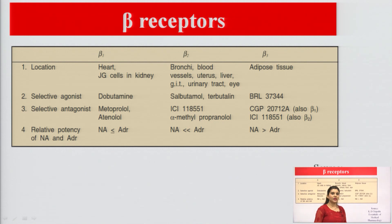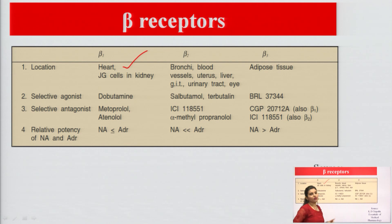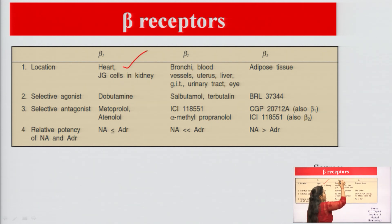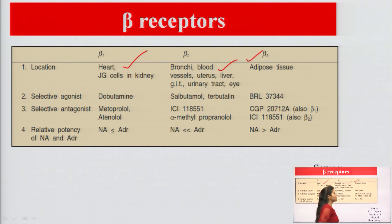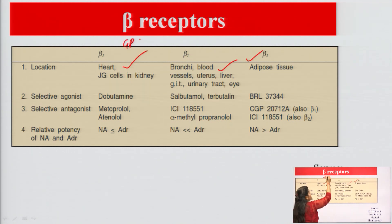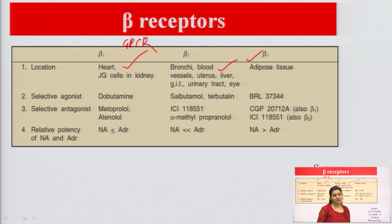The primary location of beta-1 receptor is the heart. Beta-2 receptors are located in bronchi, blood vessels, uterus, liver, GIT, urinary tract, and eyes. Beta-3 receptors are primarily located in adipose tissue. All of these receptors are G-protein-coupled receptors (GPCRs).